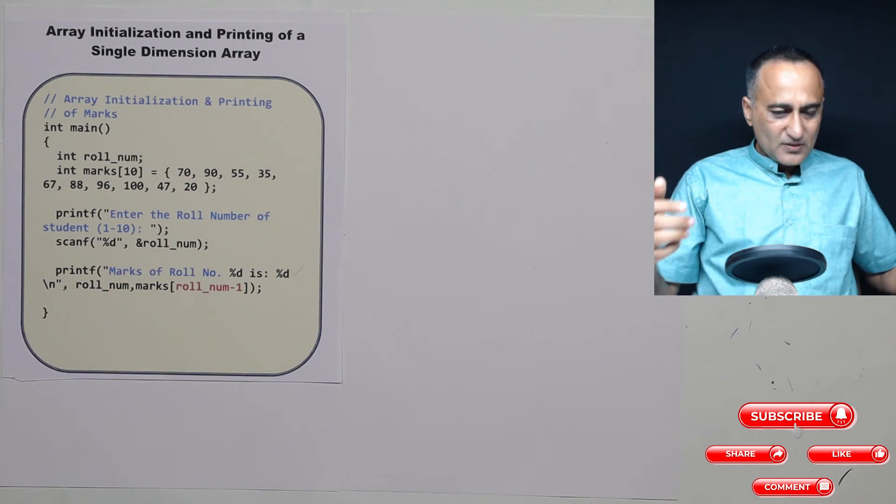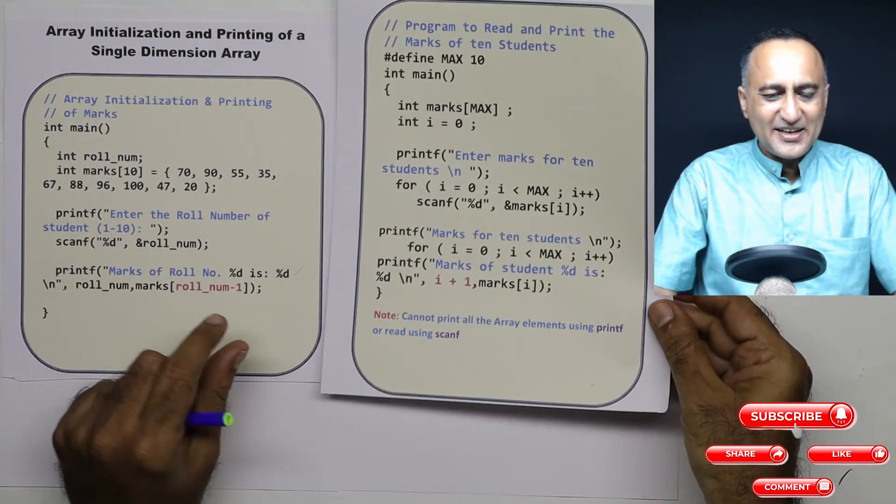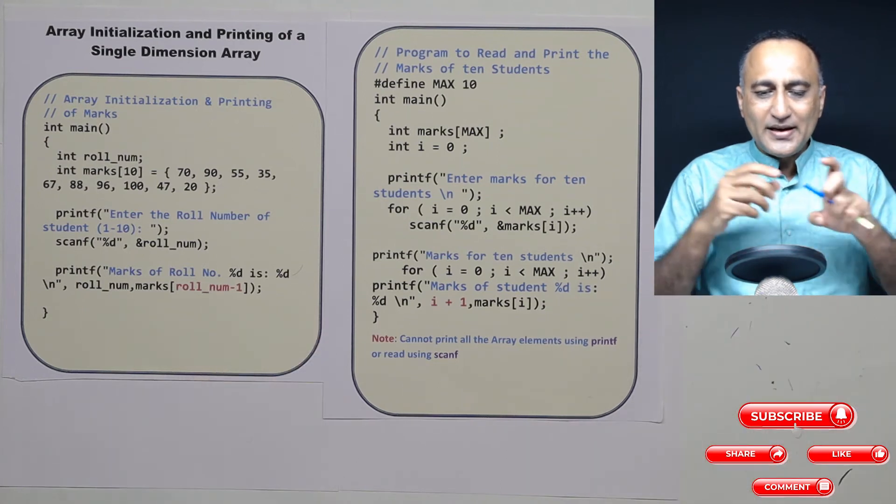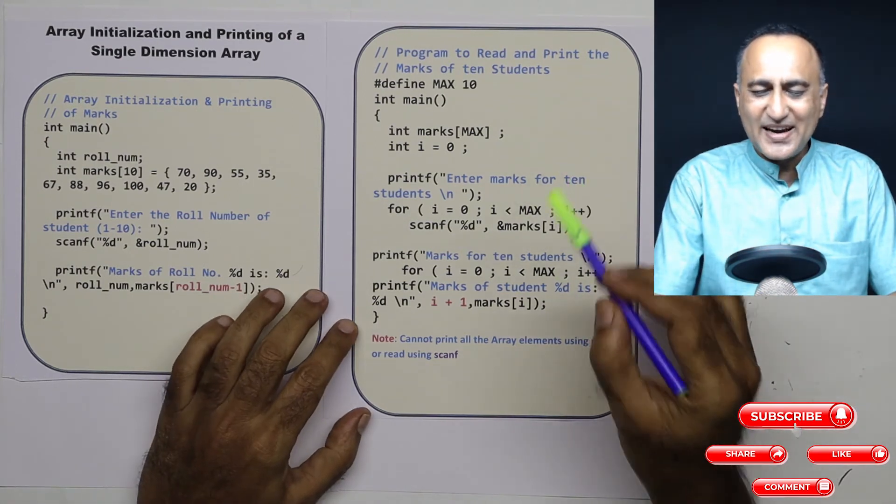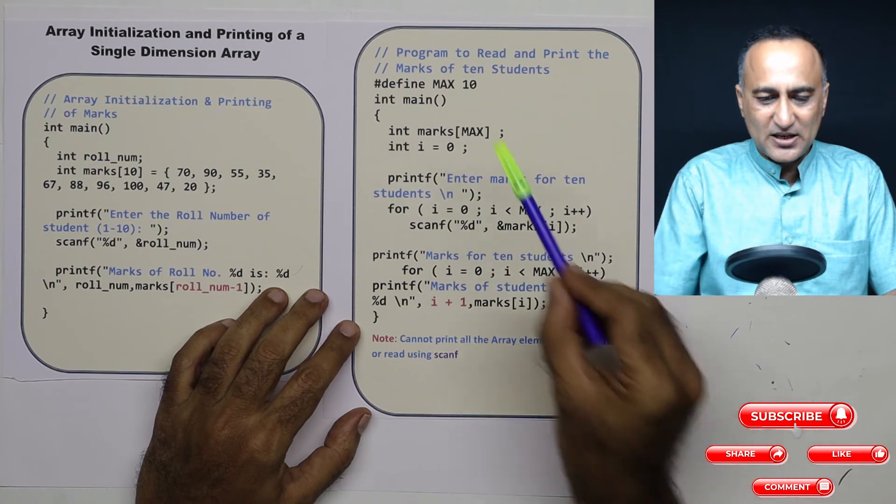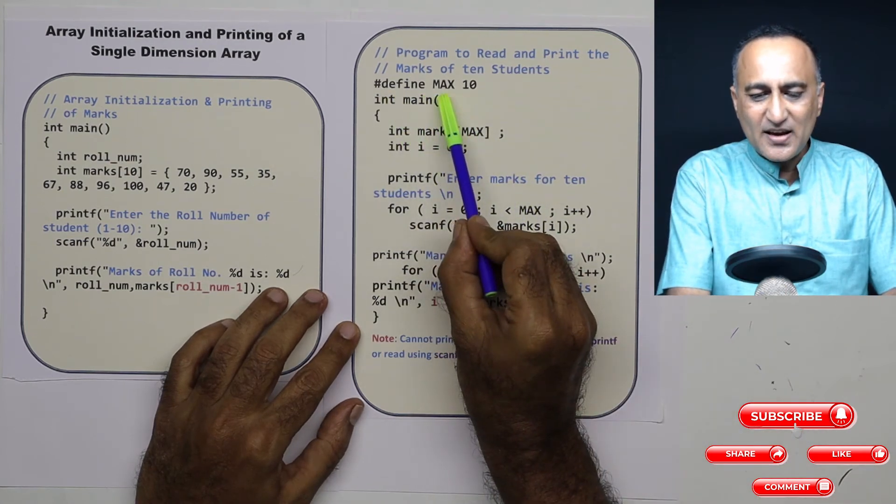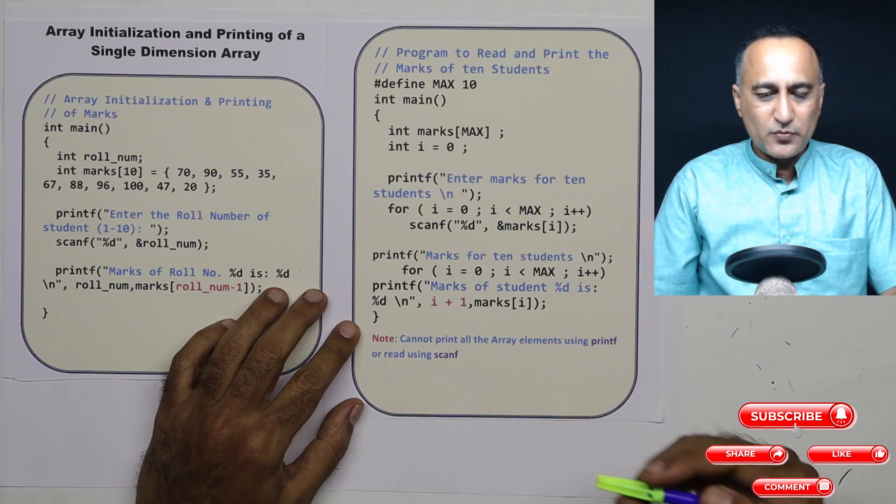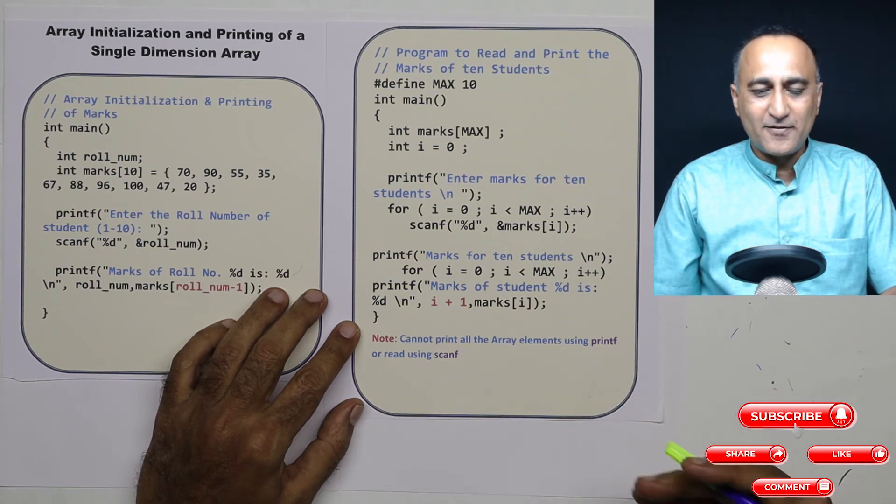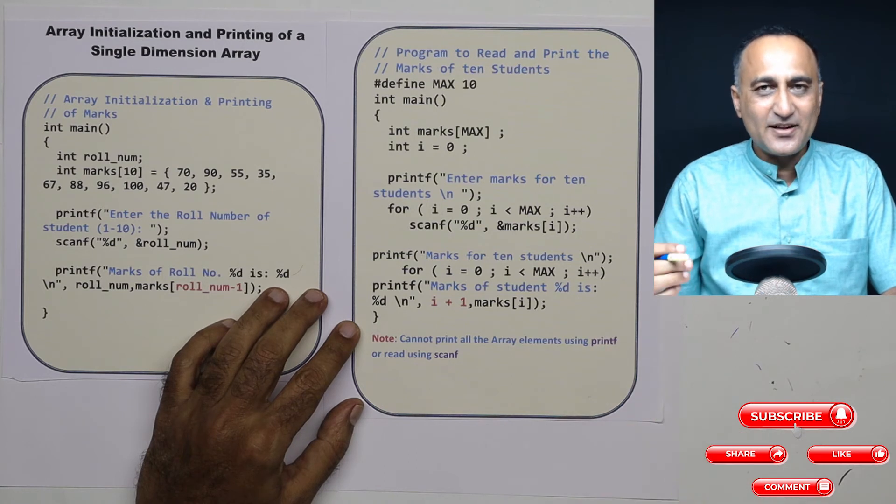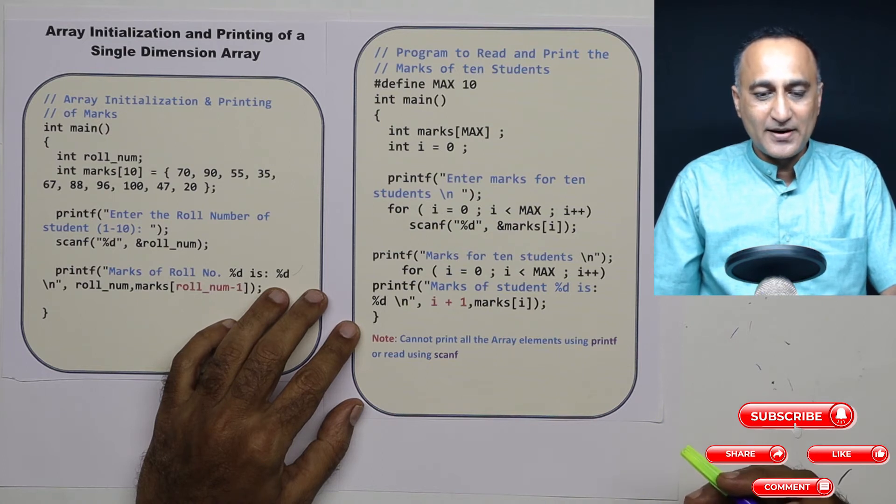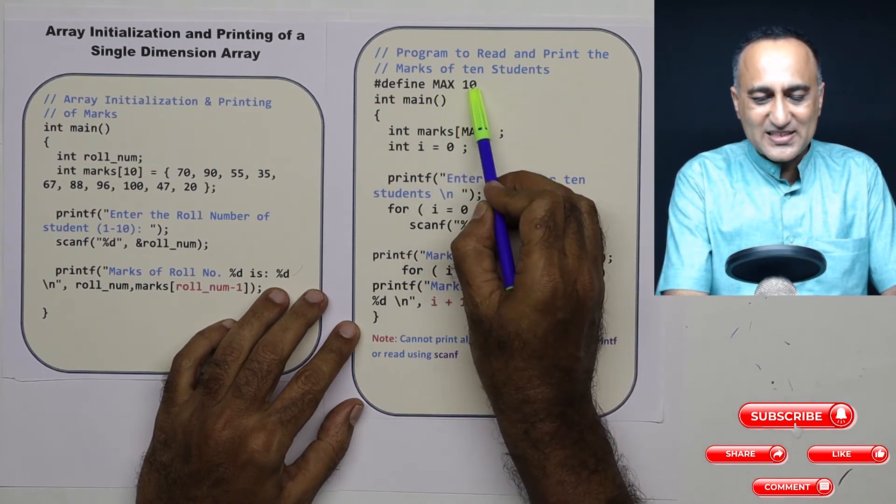Now we will do this program in a slightly different way. Here what I am going to do is I am going to read the marks of 10 students and simply print those marks. So using hash define I have declared MAX as 10. In a lot of my programs when I am explaining I may not include the header file just to save a little space. Unless the header file is important, then only I will include it.